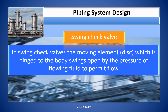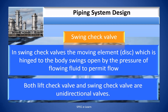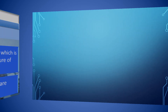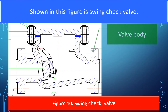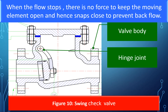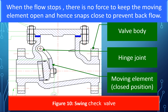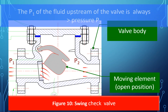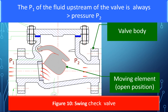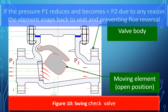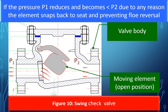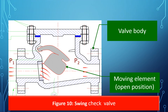In swing check valves, the moving element or disc is hinged to the body and swings open by the pressure of the flowing fluid to permit flow. Both lift check and swing check valves are unidirectional valves. When the flow stops, there is no force to keep the moving element open. The pressure P1 of the fluid upstream is greater than pressure P2. If P1 reduces and becomes less than P2 for any reason, the element snaps back to the seat, preventing flow reversal.